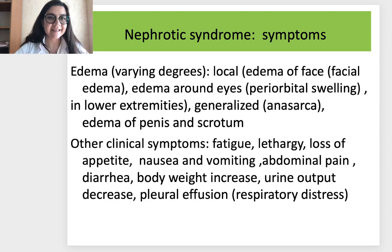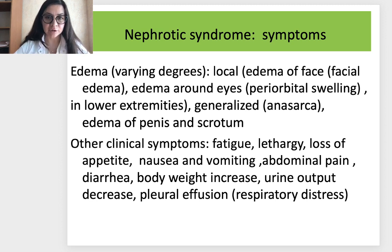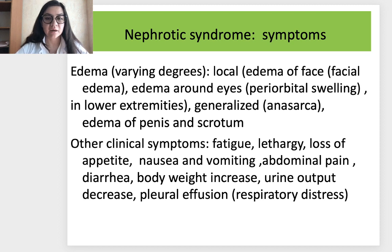Symptoms of nephrotic syndrome: edema, which can vary from local to generalized. Mostly it is facial edema — edema around the eyes, which we call periorbital swelling. It can be lower extremity edema, and in most cases, generalized edema called anasarca. In male patients, isolated edema of the penis and scrotum can occur. Other clinical symptoms include fatigue, lethargy, loss of appetite, nausea, vomiting, abdominal pain, diarrhea, body weight changes, decreased urine output, and pleural effusion leading to respiratory distress.